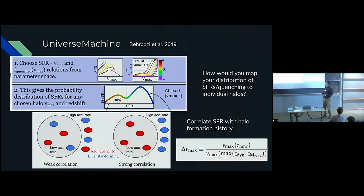It starts by assuming a population statistics and average star formation rate as a function of halo mass, and also a fraction of quenched objects as a function of halo mass. With these two at every halo mass and redshift scale, you can come up with a PDF, a distribution of how star formation rates are distributed at this mass scale.